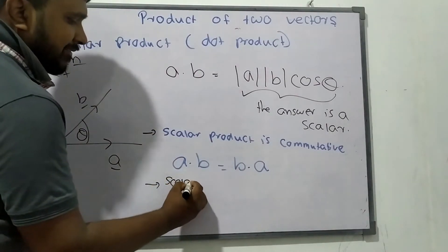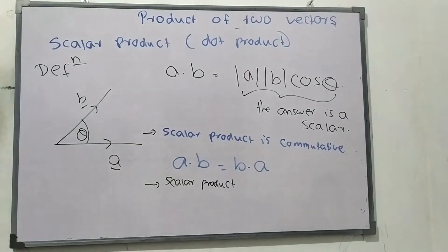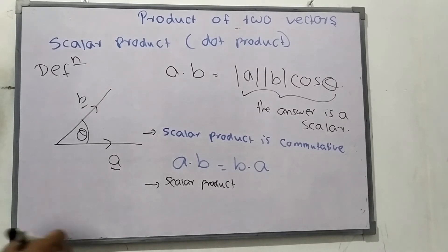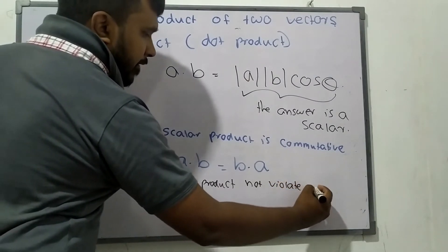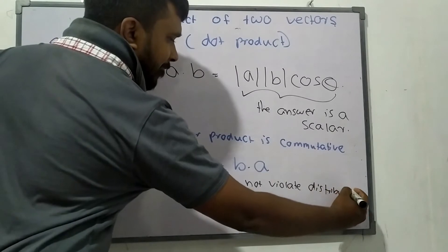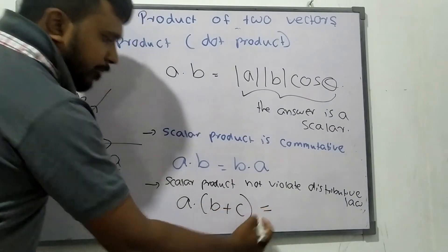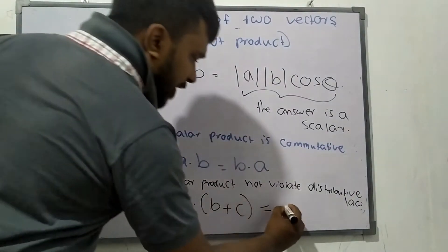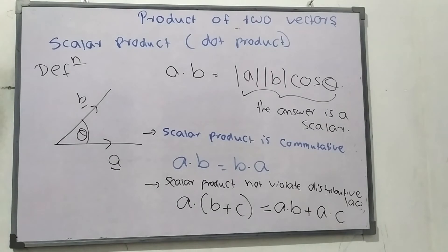The scalar product does not violate the distributive law. The distributive law states that A dot (B plus C) can be written as A dot B plus A dot C. So the distributive law is not violated in the scalar product.